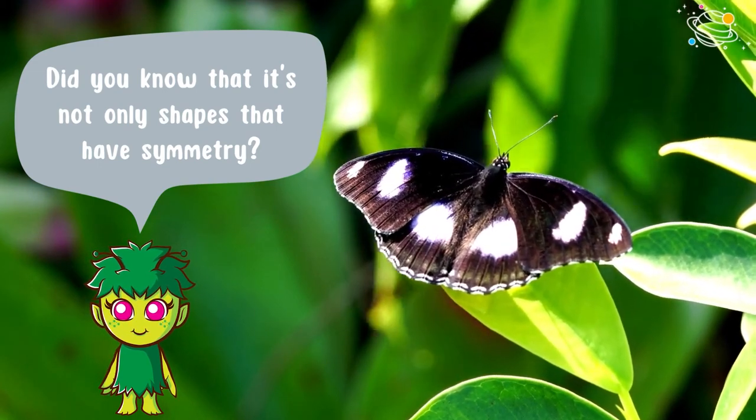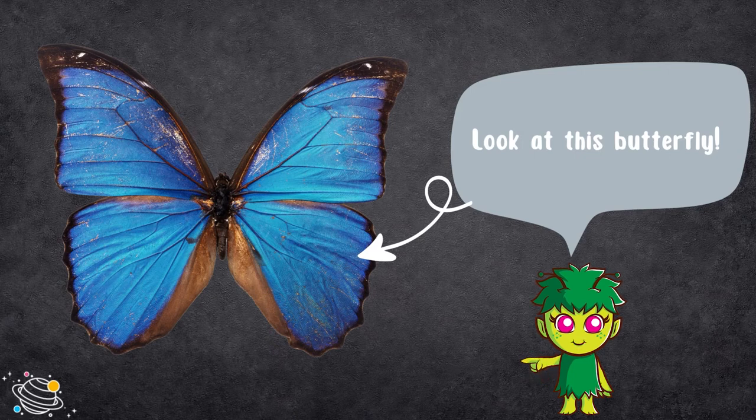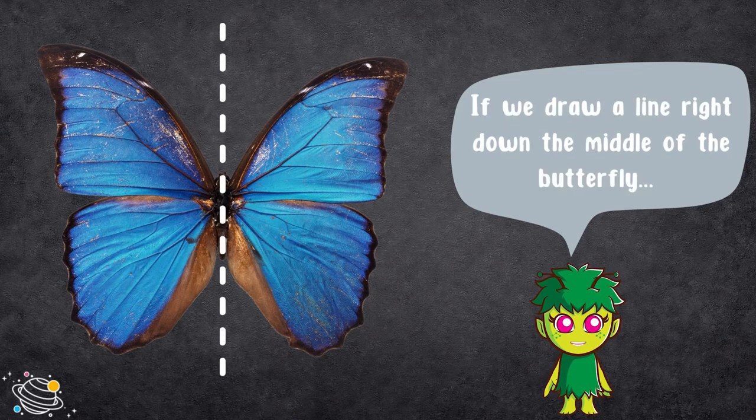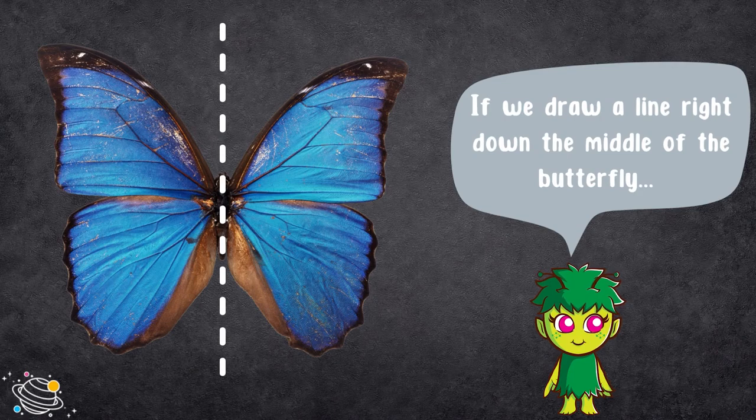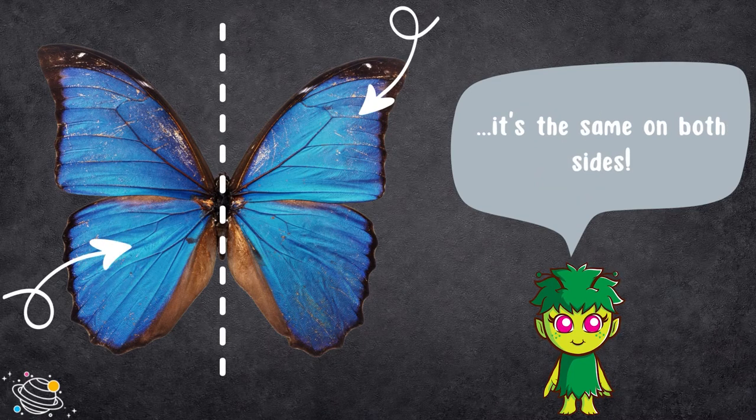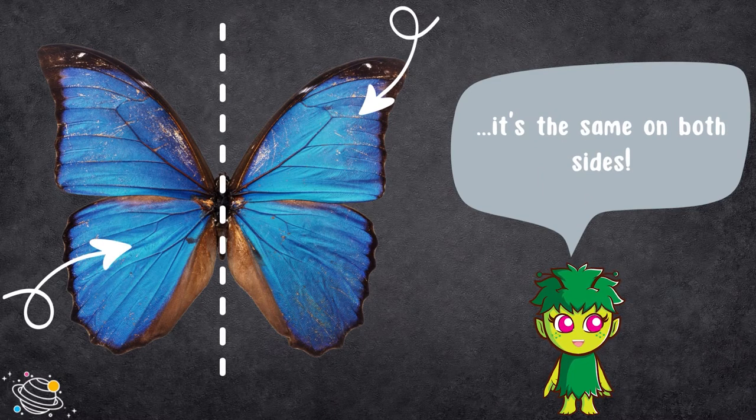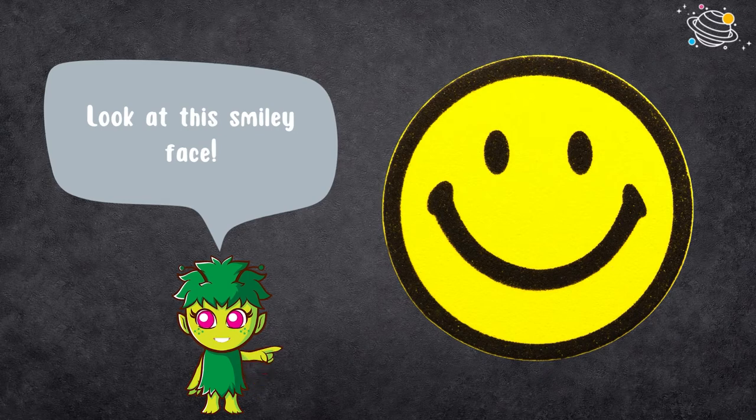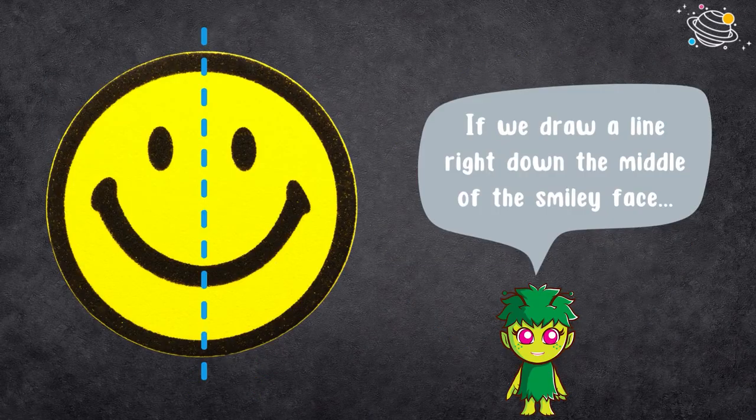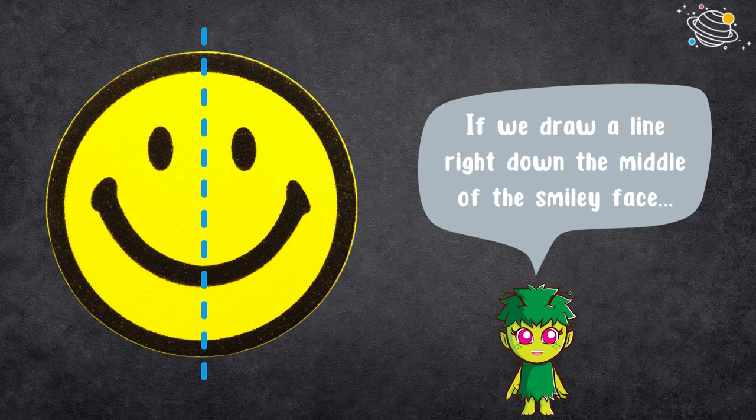Look at this butterfly. If we draw a line right down the middle of the butterfly, it's the same on both sides. Look at this smiley face. If we draw a line right down the middle of the smiley face, it's the same on both sides.